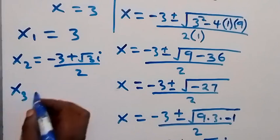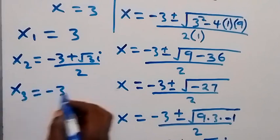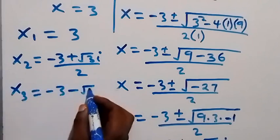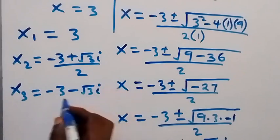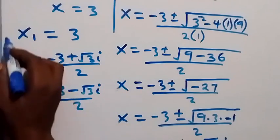Then the third one from here will now be x₃ which is equals to (-3 - √3i)/2. So here we have these three sets of solutions in this given problem.